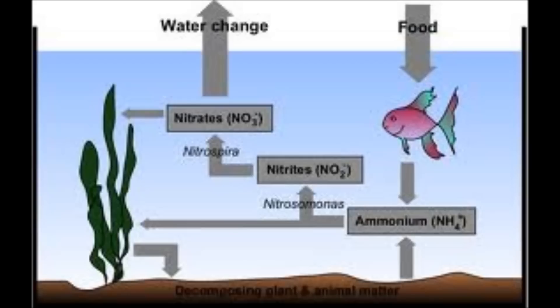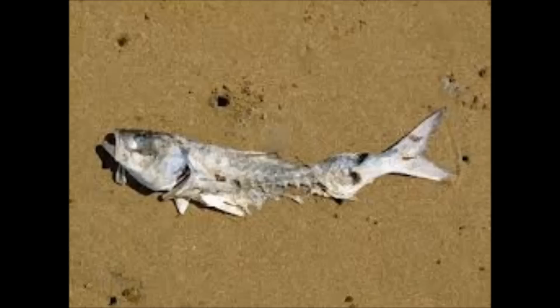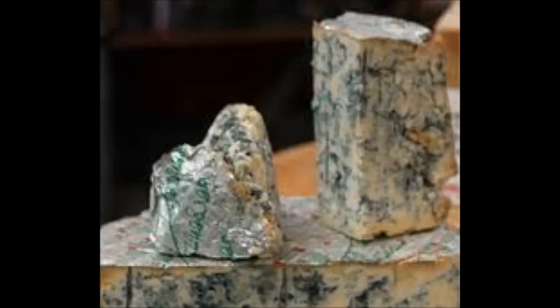Microorganisms extract nitrogen from the air for plants. Microorganisms are also very useful in decomposing dead animals and plants and producing new nutrients. Some microorganisms are also helpful in making foods such as cheese, bread, yoghurt, and fermenting alcohol.